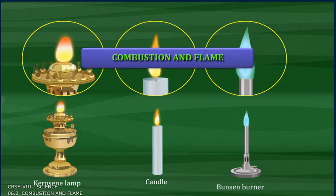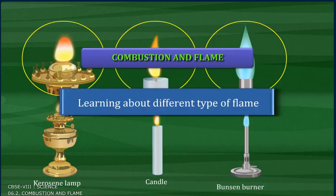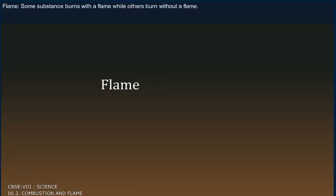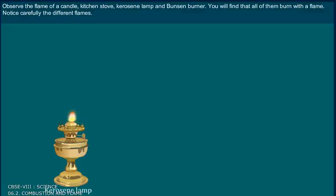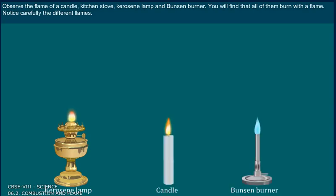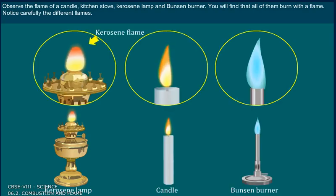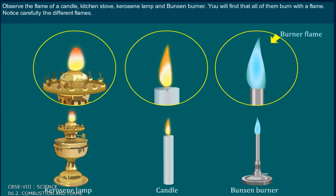Combustion and Flame: learning about different types of flame. Some substances burn with a flame, while others burn without a flame. Observe the flame of a candle, kitchen stove, kerosene lamp and Bunsen burner. You will find that all of them burn with a flame. Notice carefully the different flames.